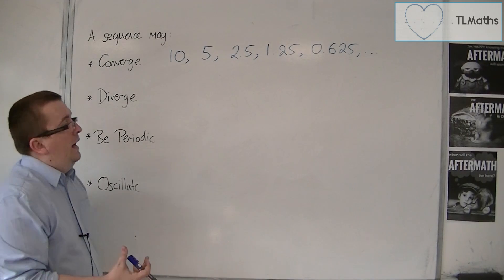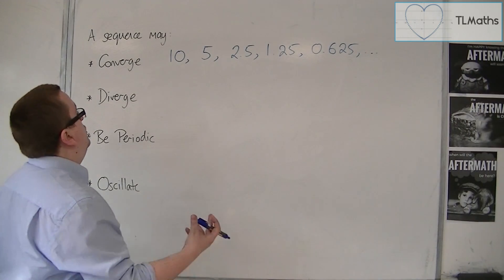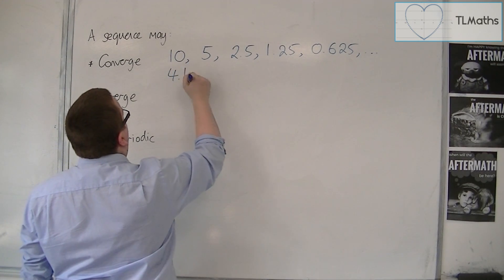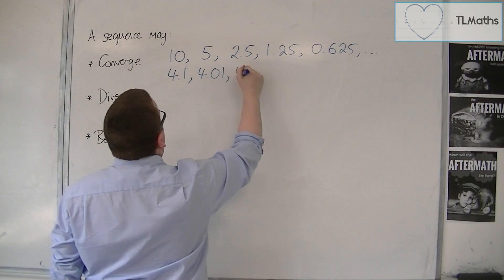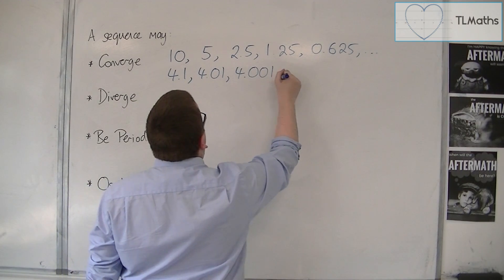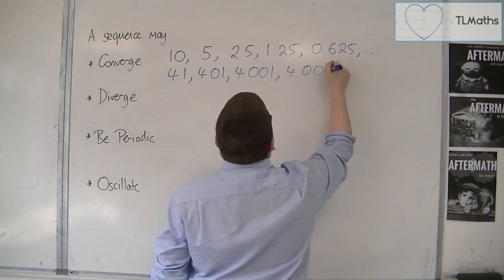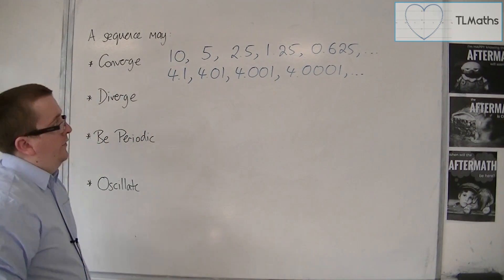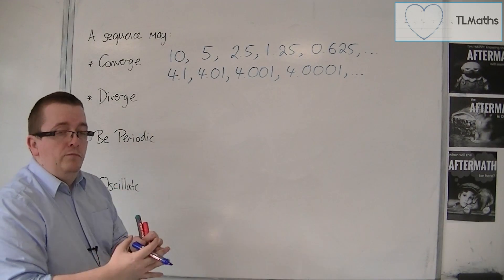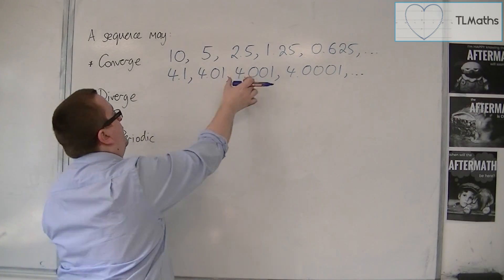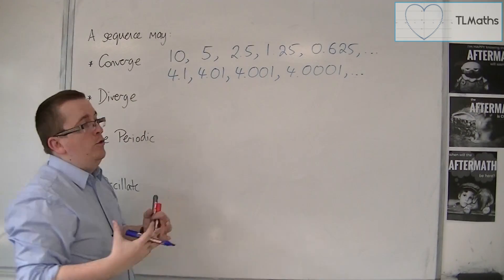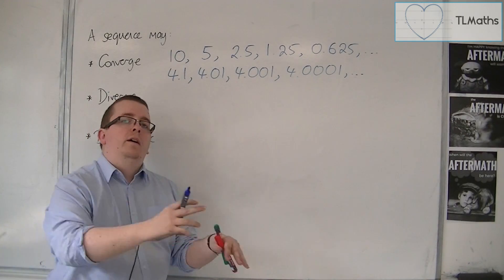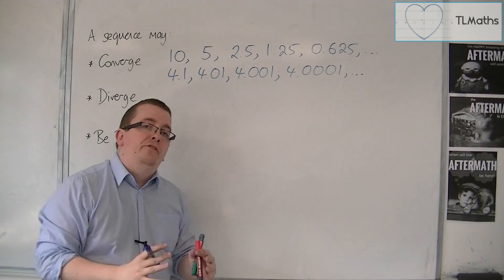In a similar way, you might have something like 4.1, 4.01, 4.001, 4.0001, and so forth. As I said before, the difference between each successive pair is decreasing, and you can generally see what number the sequence is converging to.